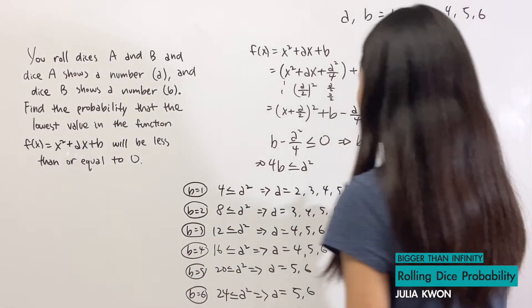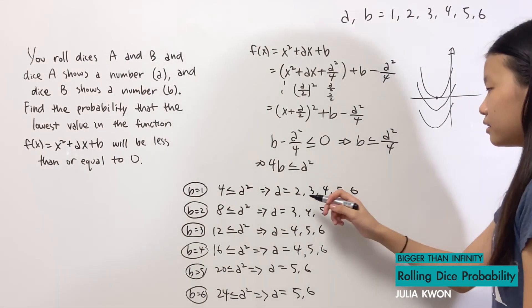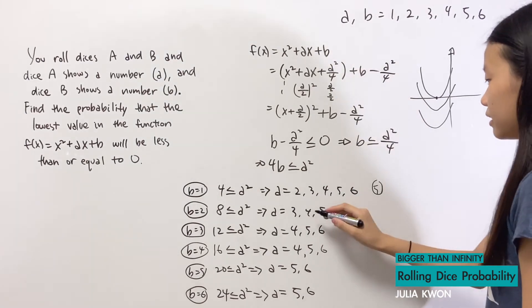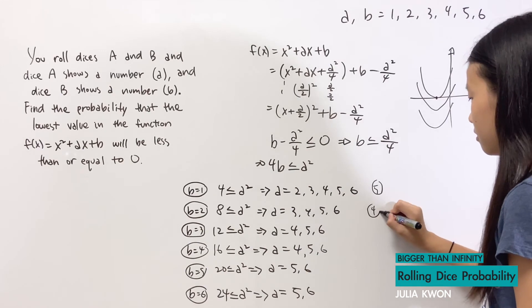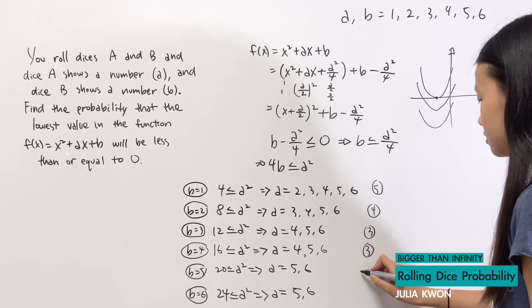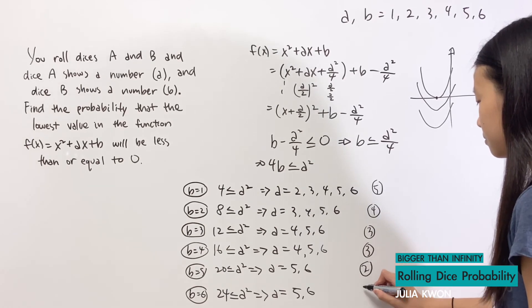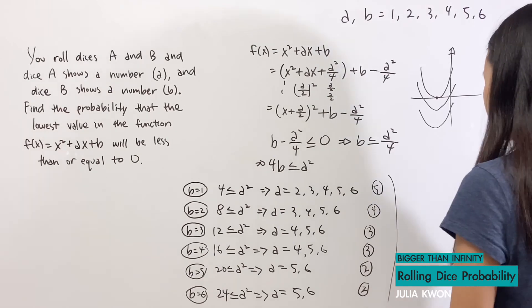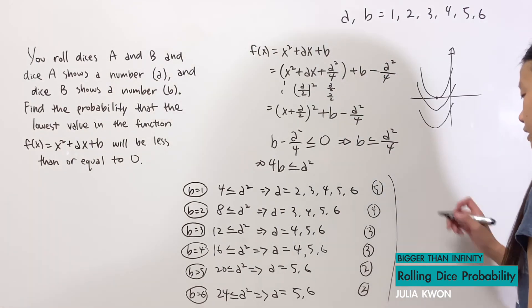So how many of these numbers did we just write? We have 5 here, we have 4, we have 3, and then 3 once again, 2 and 2. And if we add all of these together, we get 19.